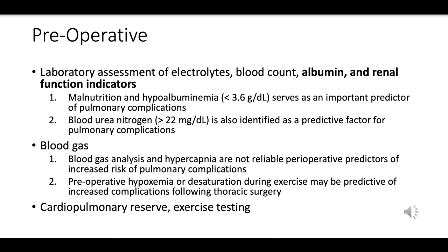Key aspects of preoperative laboratory assessment before thoracic surgery include electrolytes — abnormal levels can suggest issues with kidney function, dehydration, or other conditions. Blood count provides information about general health, anemia status, and infection.